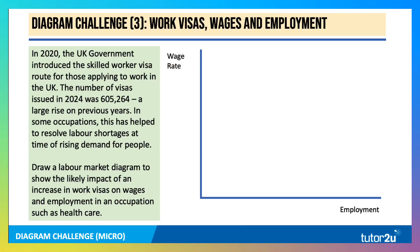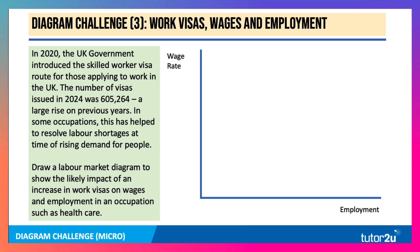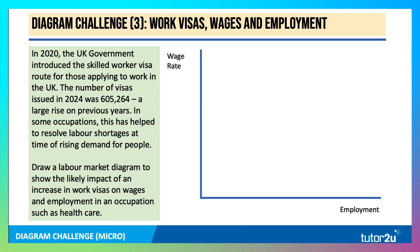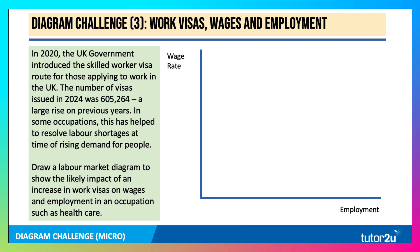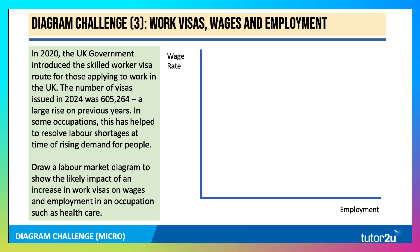Here's number three. Turning to the labour market, this question is about work visas. In 2020, the UK government introduced the skilled worker visa route. In 2024, just over 600,000 work visas were granted — a big rise on previous years. In some occupations this has helped resolve labour shortages during rising demand, for example in health and social care. Draw a labour market diagram to show the likely impact of an increase in work visas on wages and employment in an occupation such as healthcare.